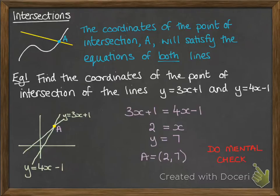Now, it's always a good idea to do a mental check when you get to this point to check that it actually works. For example, if you took that x equals 2 and you put it into 3x plus 1 to work out that y was 7,